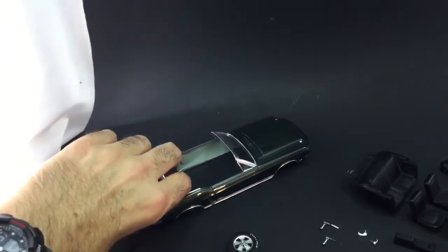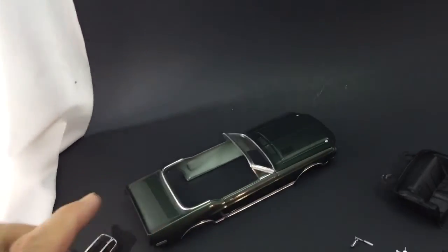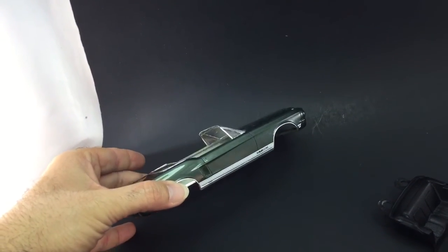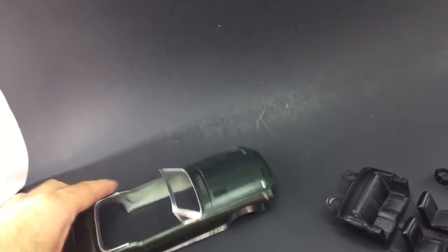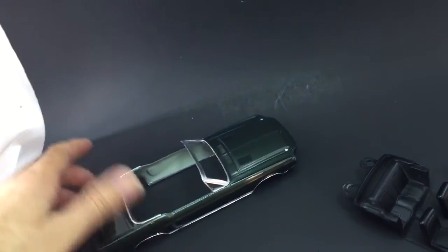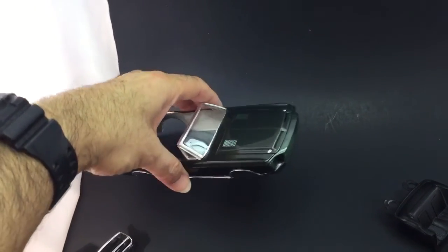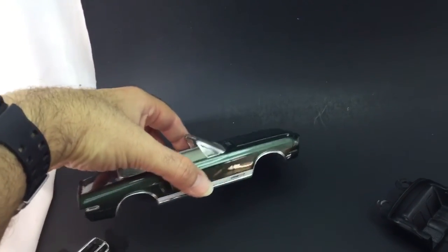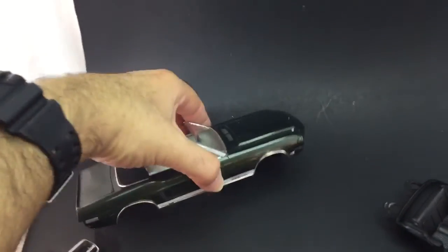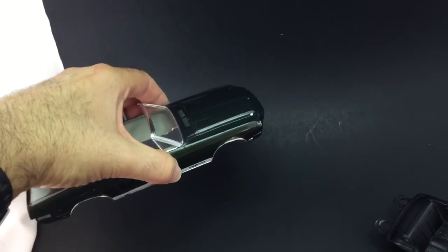I bare metal foiled some parts already. I still have to paint the signal lights on the sides. I did put the decal on the side. I also bare metal foiled the frame and put the glass in there already. I've done a couple of things to the body, but it's basically all done, at least the body paint-wise.